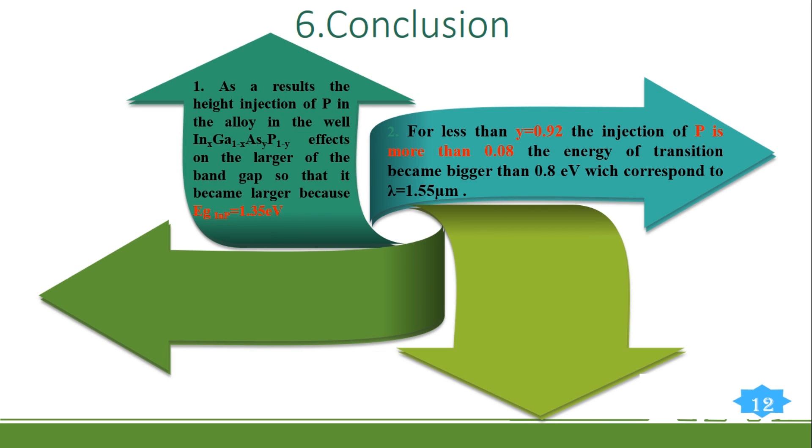We avoid studying this structure for less than y equals 0.92. We neglect the second and third transition in the calculation of transition because they cannot achieve the laser wavelength that we want to use in our study.